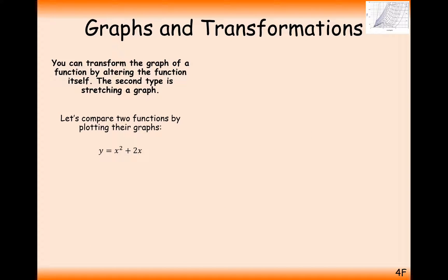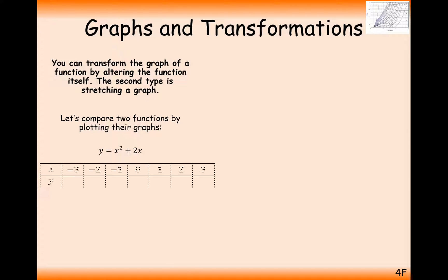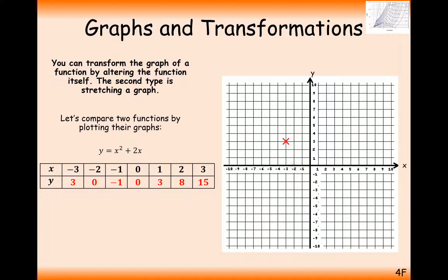Let's compare the two functions. We're starting with y equals x squared plus 2x. Previously we worked out the coordinates by plugging in different x values, plotted the graph, and it looked roughly like this. Now let's consider what we get when we plot the graph 2 bracket x squared plus 2x.